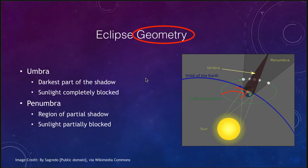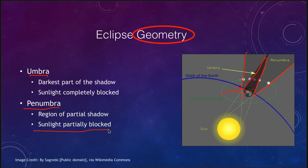When we look at the shadows, there are two types. We have the umbra, which is the darkest part of the shadow where sunlight is completely blocked. If you were standing anywhere in the umbra, you would not be able to see the sun at all. If you're in the penumbra, which is the region of partial shadow, you would see only part of the sun — the sunlight is partially blocked, with the earth covering just a portion of the sun, not the entire sun as in the umbra.